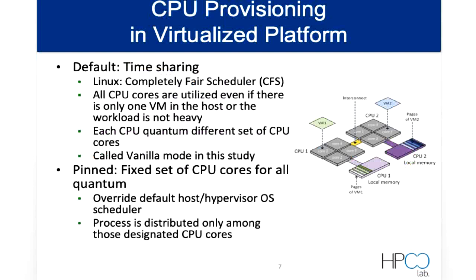There are two different approaches for provisioning CPUs in virtualized platforms. The first is timesharing — in a Linux OS, the Completely Fair Scheduler (CFS) is used, meaning all CPU cores are utilized even with only one VM or light workloads, and each CPU quantum gets a different set of CPU cores. We call this vanilla mode. In contrast, pinning mode uses a fixed set of CPU cores for all quantums, overriding the default hypervisor OS scheduler so that processes are distributed only among those designated CPU cores.